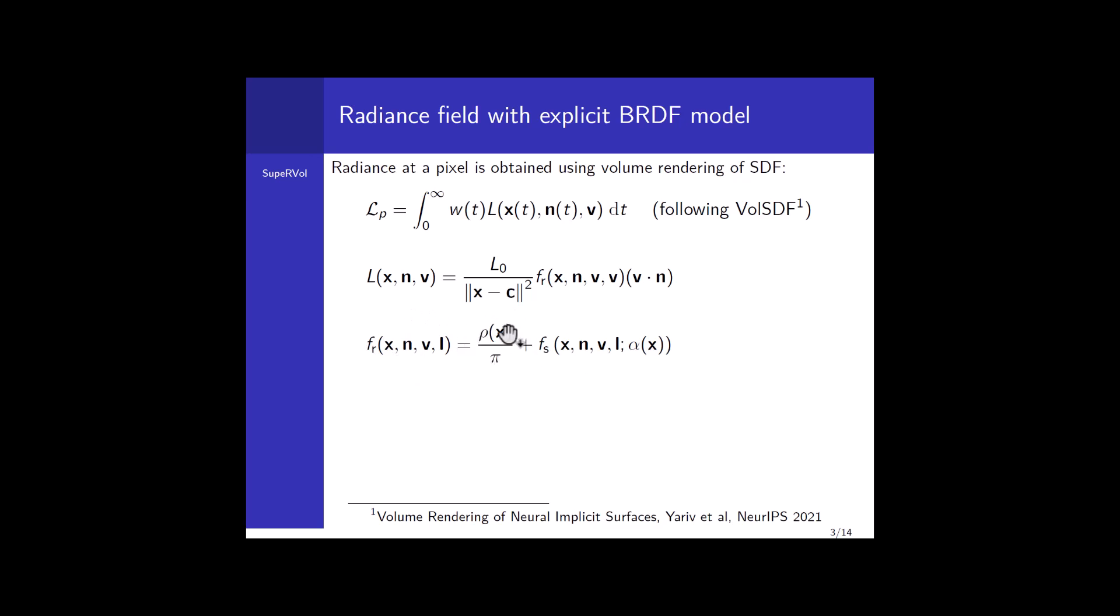The BRDF can be decomposed into two parts: the diffuse part given by the diffuse albedo, and the specular part whose expression depends on the BRDF model considered. Alpha here are the specular parameters. We decided to choose a simplified version of the Disney BRDF. Our architecture consists of three MLPs: one MLP for the signed distance field, and two MLPs that represent the material - the first one for the diffuse albedo and the second one for the specular parameters. Here in our case, roughness and specular albedo, but other specular models can be considered as well.